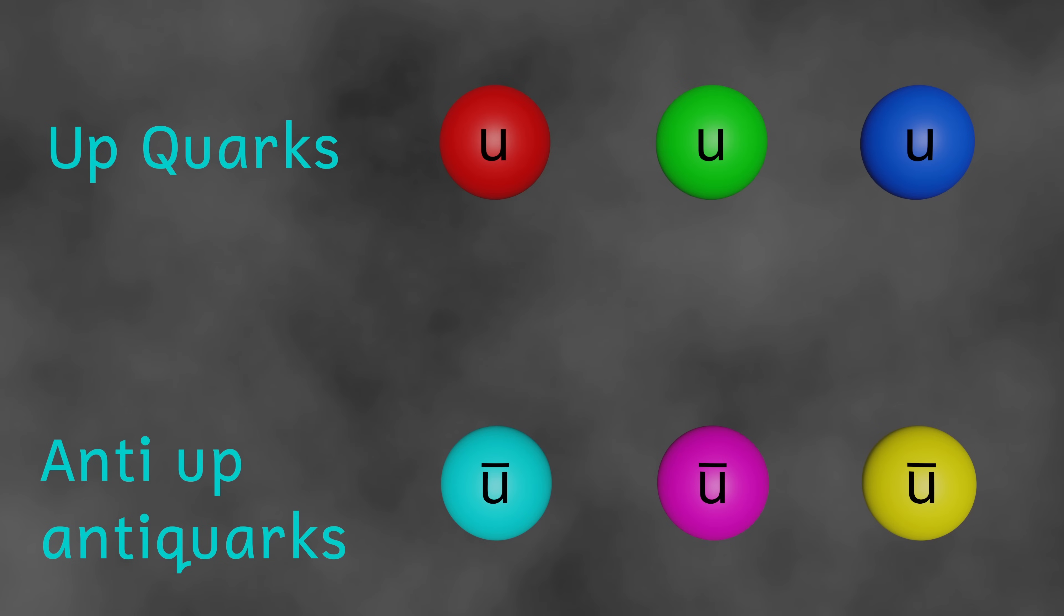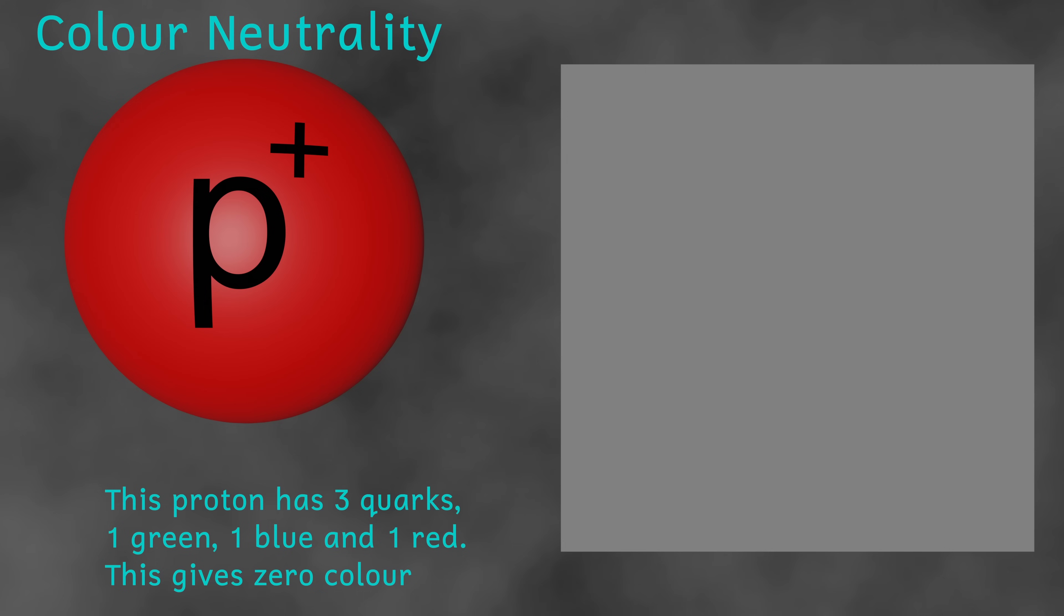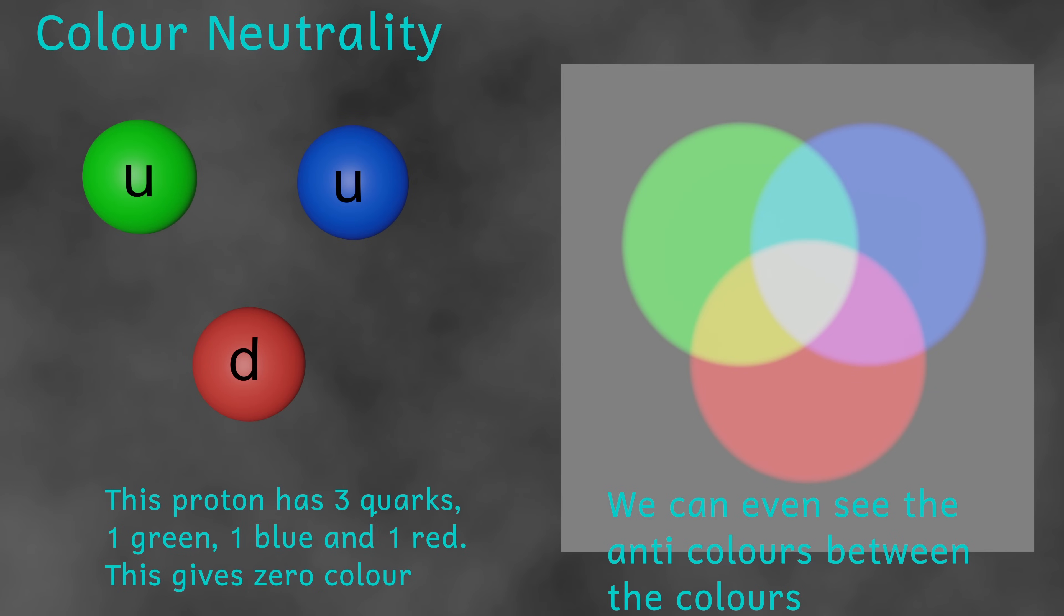And this color charge is really important when it comes to quarks forming larger particles. When quarks form other particles, the resultant color of that particle must be zero. This is called color neutrality. It's also why color is a useful way of thinking about this property. Just like with light, if I mix red, green, and blue, I get white light. This means that the color of the particles made by quarks must always be white, or neutral.